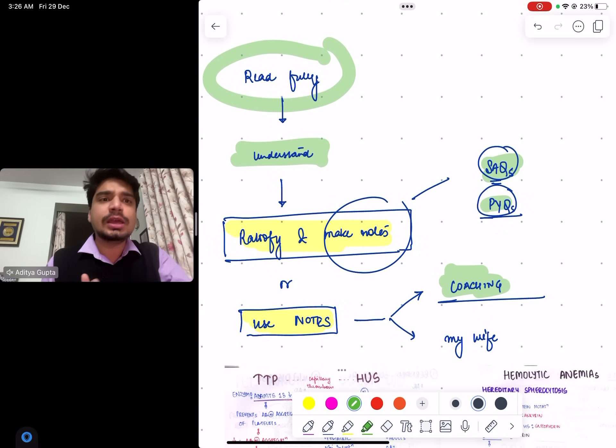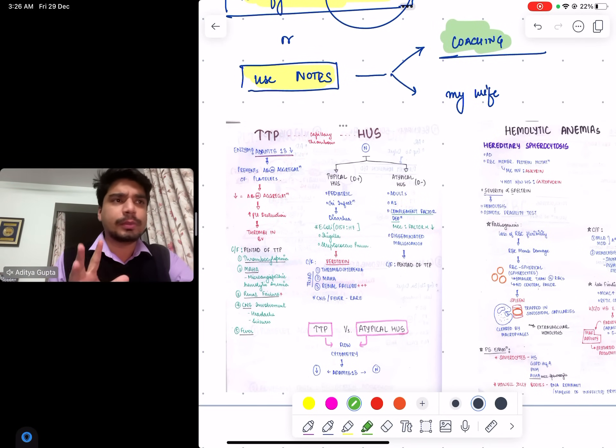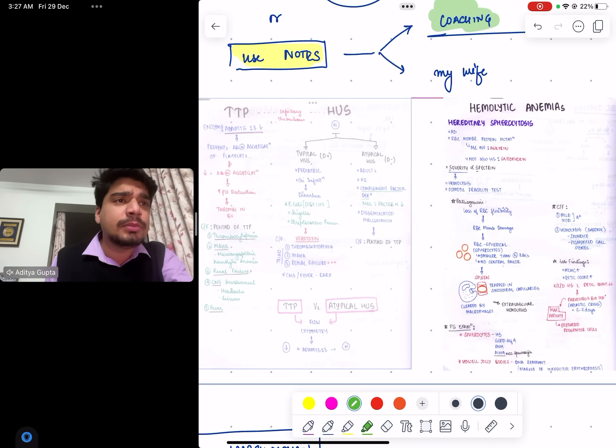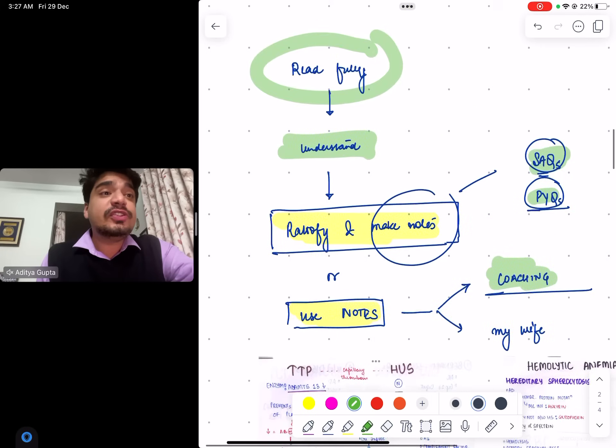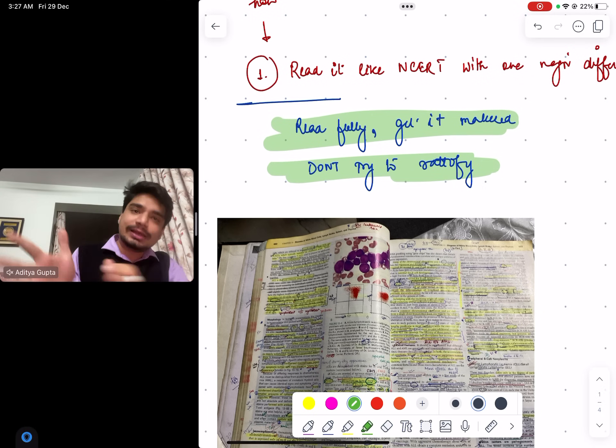So you can get your book marked by seniors - your SAQs and previous questions. Read fully, understand, get your concepts strong. Ratify and make notes of the things that have been marked by your seniors. Read your Robbins fully like NCERT. Use coaching notes - Marrow, Prep Ladder, anyone. Even for that matter, Divya has also made really good notes from Robbins. For example, this is hemolytic anemia. This is what they ask - HTP versus HUS short note on that, hemolytic anemia, hereditary spherocytosis pathophysiology. All these notes are made from there. That's how you have to make notes - you read a concept, you concise it, and you make your own notes.